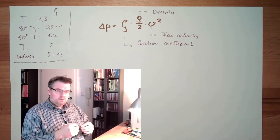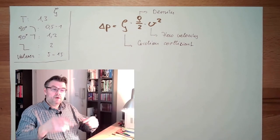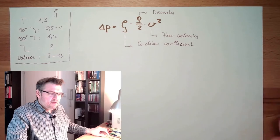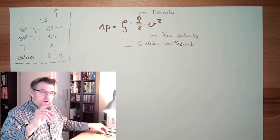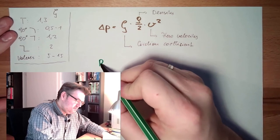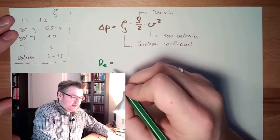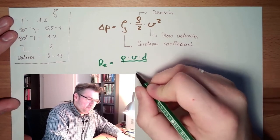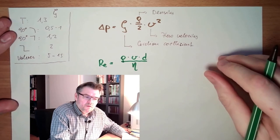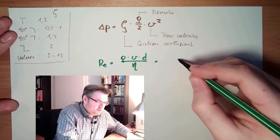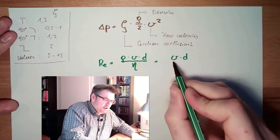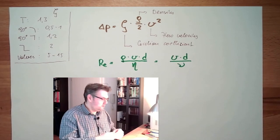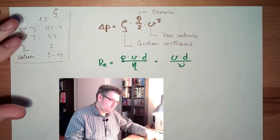There are also pieces inside the tube, and the length of the tube is important. There is the Reynolds number Re, which can be calculated by the density, the velocity, and the diameter of the tube divided by the dynamic viscosity. This is actually the same as the velocity multiplied by the diameter divided by the kinematic viscosity. D is the diameter of the tube in meters, the kinematic viscosity is in square meters per second, and V is the flow velocity in meters per second.